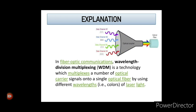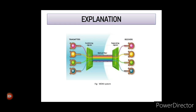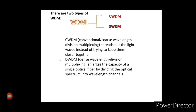Fiber optics communication involves a WDM multiplexing technology which multiplexes a number of optical carrier signals into a single optical fiber by using different wavelengths of light. In the WDM system diagram, there are a number of transmitters and receivers; the combined signals are sent via the optical fiber, separated again, and transmitted to the receiver end.